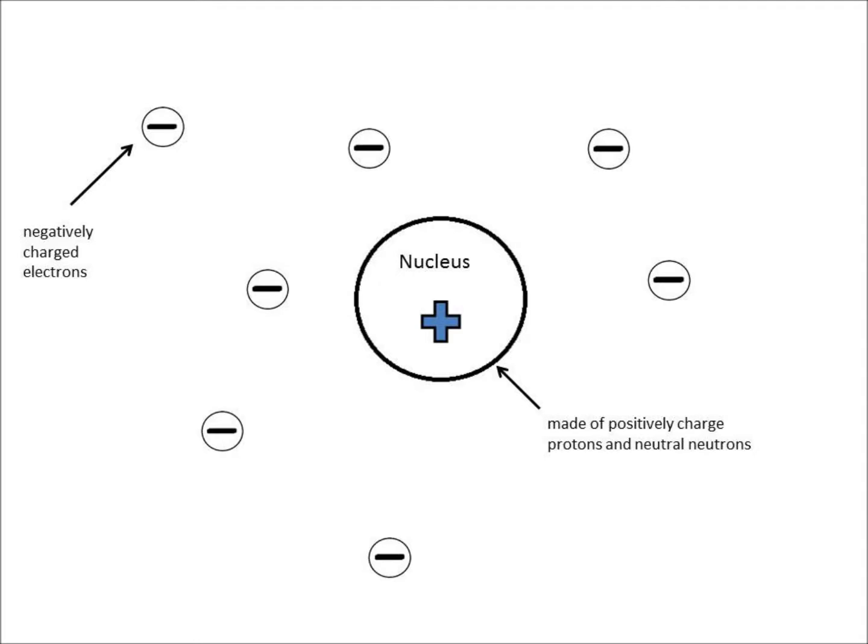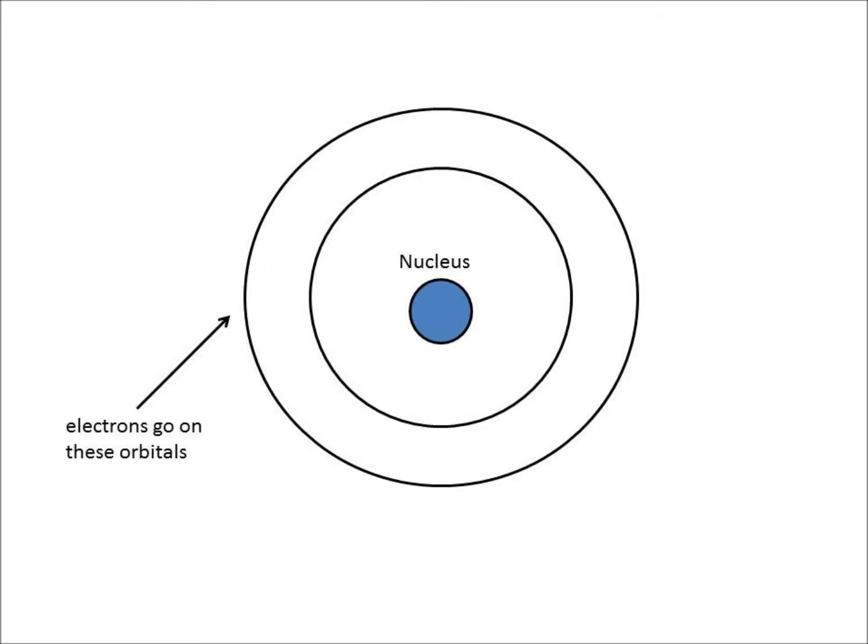The structure of an atom is composed of a central nucleus containing positively charged protons and neutral neutrons, and is surrounded by electrons. To keep things simple and illustrate this concept clearly, these electrons are located in orbitals that go around the nucleus at a fixed distance.